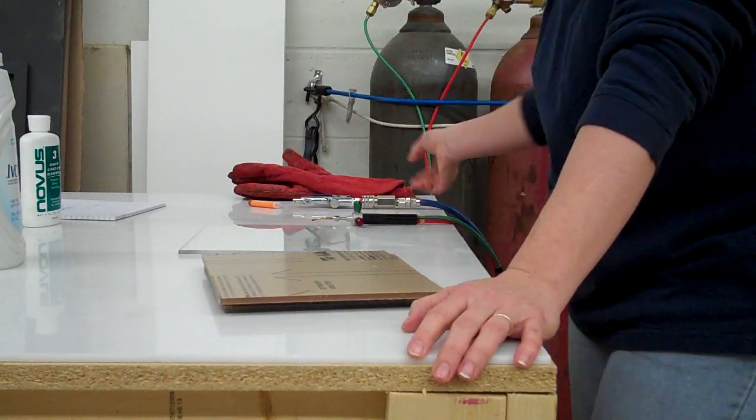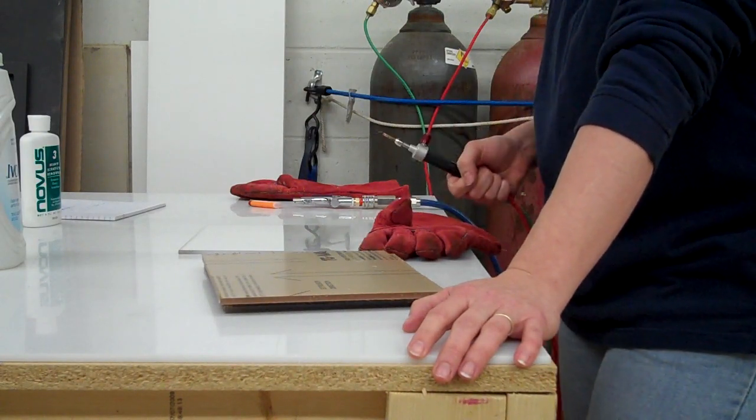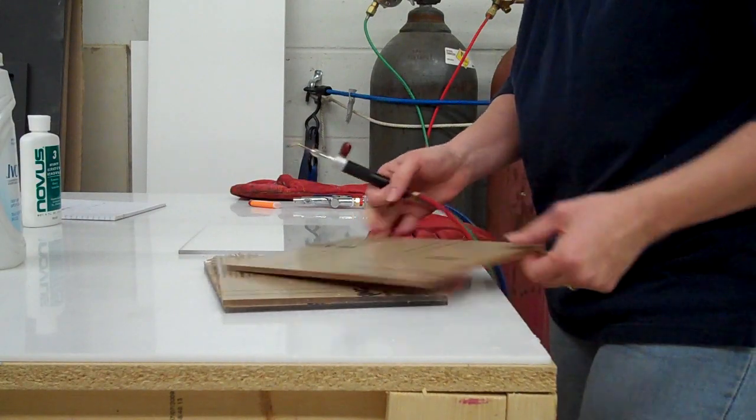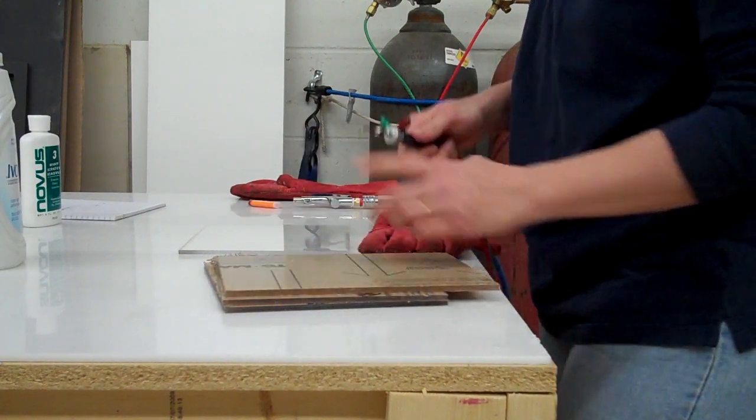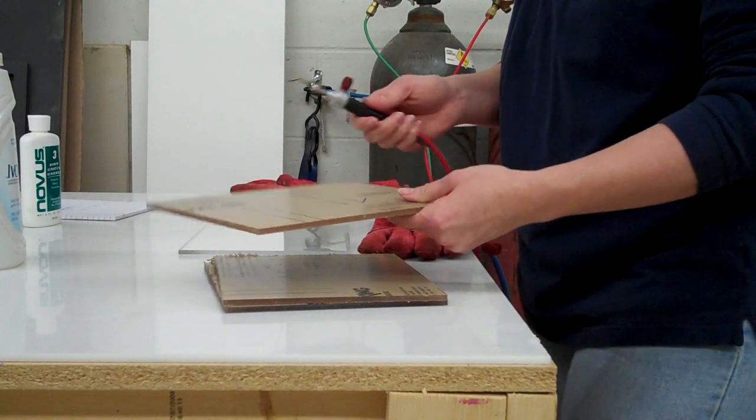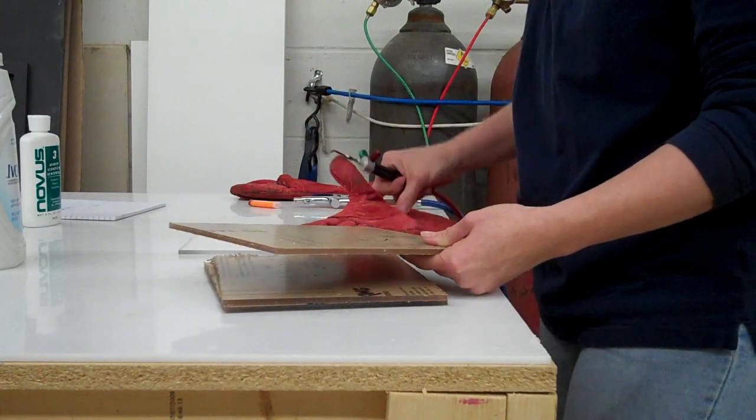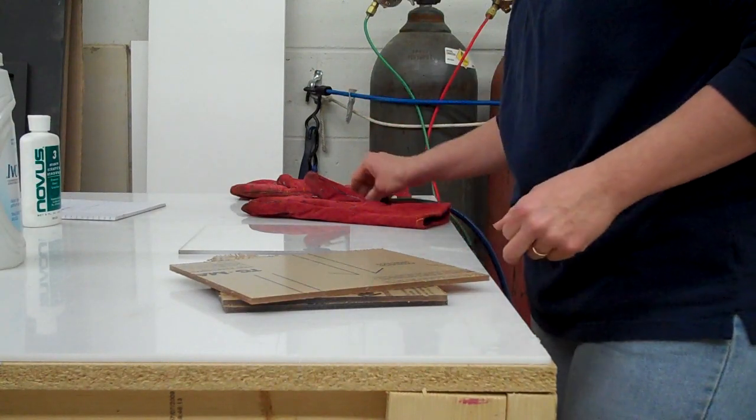I prefer to use welding gloves because, number one, the plexi gets awfully hot as you're turning it around while flame polishing. Number two, you'll notice this flame comes out fairly far. If you accidentally hit into your hand, I'd rather hit the welding glove than nice pink skin.